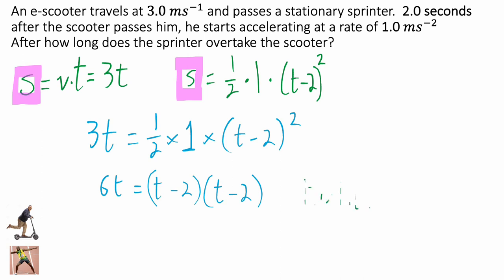So, I went for 6t is equal to the first expression, t times t, t squared. Then the outer expressions there, t times minus 2. Then the inner ones, minus 2 times t, there's another minus 2t. And then the last two expressions, minus 2 times minus 2, giving us plus 4. So far, so good.